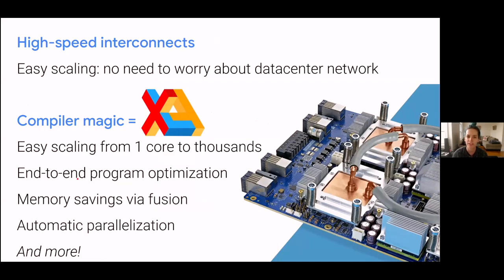What do these two key features actually get you? With the high-speed interconnects, you get easy communication scaling — you don't need to worry about the data center network topology; everything kind of just works as you scale it out. With the compiler magic, you get a ton of cool compiler optimizations, a few of which are listed here, but there are many more.